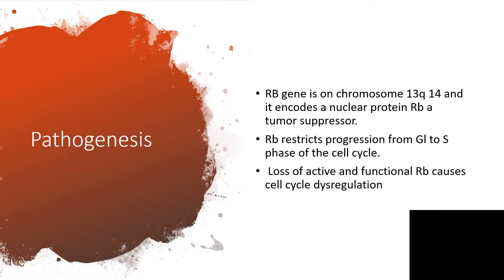The retinoblastoma gene is found on a chromosome and can cause a nuclear protein called RB, which is a tumor suppressor. The RB functions essentially to restrict progression from the G1 phase of the cell cycle to the S phase. When there is loss of active and functional RB, that will lead to cell cycle dysregulation.